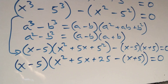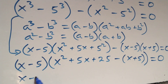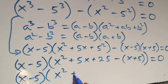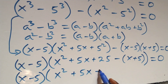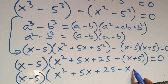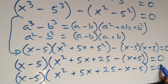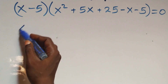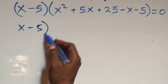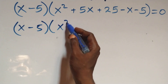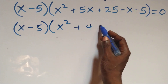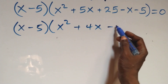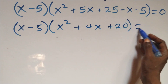Next step, expanding the minus sign through the bracket, what we have becomes x minus 5 times bracket x squared plus 5x plus 25 minus x minus 5 equals 0. Combining like terms inside: x squared plus 5x plus 4x and 25 minus 5 gives us plus 20. So we have x minus 5 times bracket x squared plus 4x plus 20, equals 0.